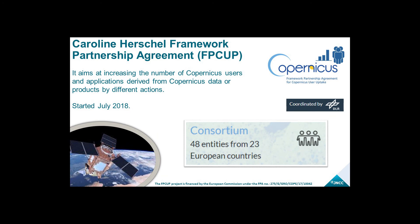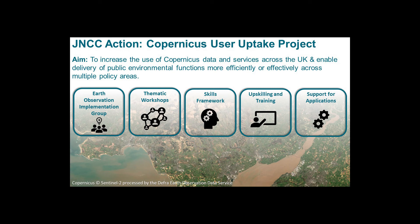The funding source for our project is the Caroline Herschel Framework Partnership Agreement, and it is a consortium of organisations from 23 European countries of which the JNCC are one. This agreement aims to increase the uptake of Copernicus data products and services. JNCC's statutory UK and international remit and a strong culture of partnership working and innovation means we are uniquely placed to develop shared cost effective solutions for our partners and stakeholders across the UK. Our action has a series of components designed to enable long-term uptake of Copernicus data across UK public environmental functions, and today's workshop on soil moisture is part of our thematic workshop series.